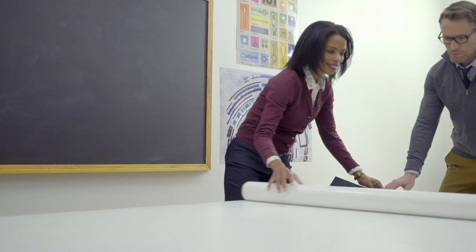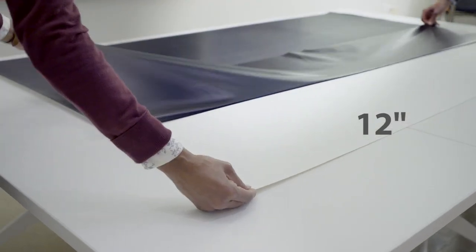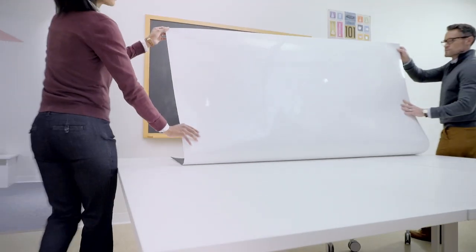Then, unroll the Post-It dry erase surface on a flat, clean area and peel back 12 inches of the black liner from the top edge.